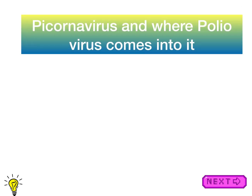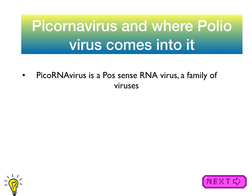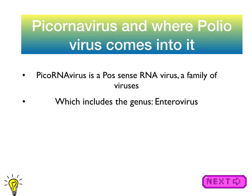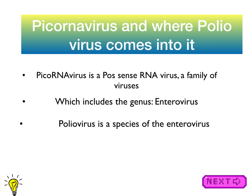Picornaviridae and where poliovirus comes into it. Notice how RNA is in capitals because this is an RNA virus — it's a positive-sense RNA virus and it's a family of viruses. This includes the genus enterovirus, and poliovirus is a species of the enterovirus.